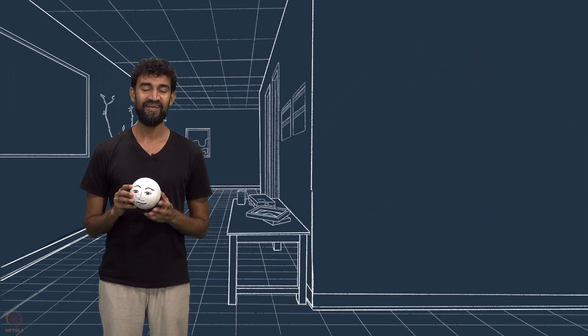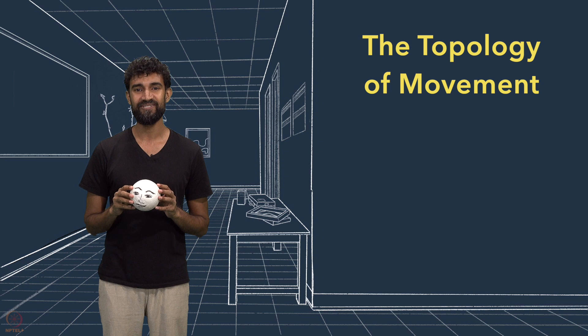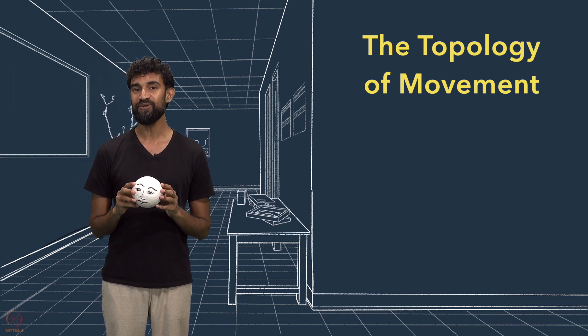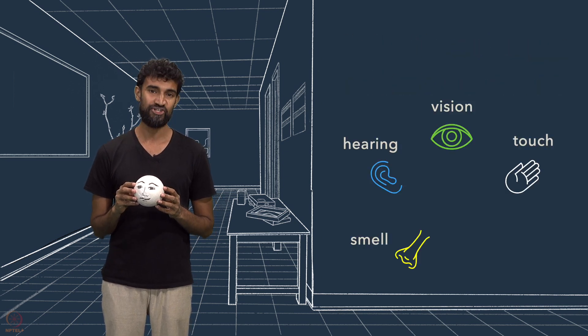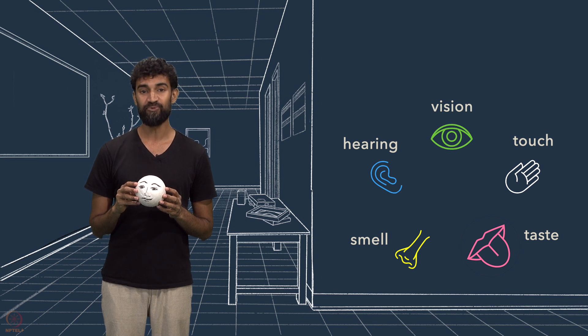I'm Vijay, and this is the topology of movement, in which we'll answer this question by closely observing one of our physical senses. Not vision, hearing, touch, smell, or taste. But rather a sixth sense, known as spatial orientation.